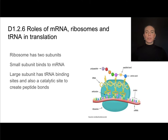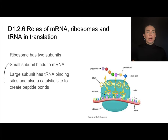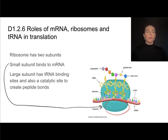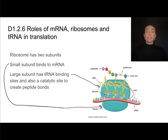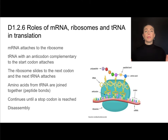The ribosome is actually made of two subunits. The small subunit is on the bottom, where the mRNA is going to bind. The large subunit is the larger part on top, and this part of the ribosome contains binding sites for tRNA and also a catalytic site to help create peptide bonds between the amino acids that the tRNA molecules are carrying in.